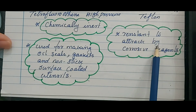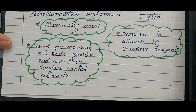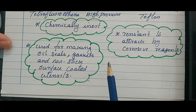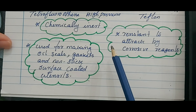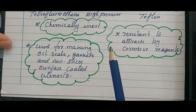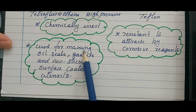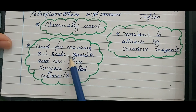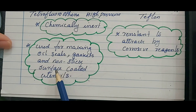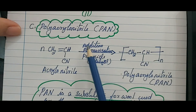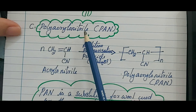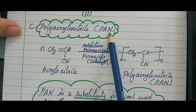Teflon is resistant to attack by corrosive reagents — even concentrated dishwash on a Teflon-coated vessel will not remove the coating unless you rub it with a hard object. Teflon is used for making oil seals, gaskets, and non-stick surfaces of utensils.